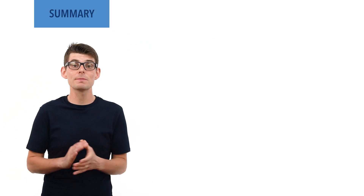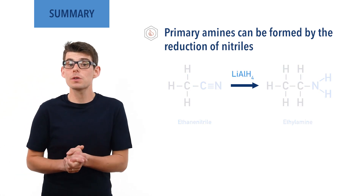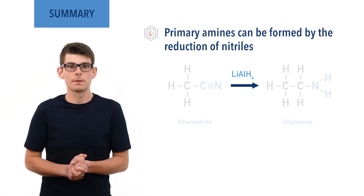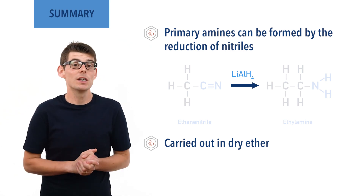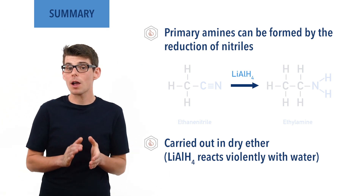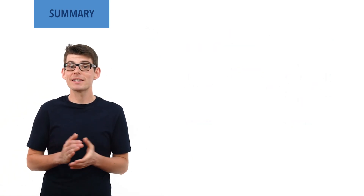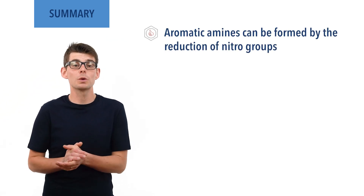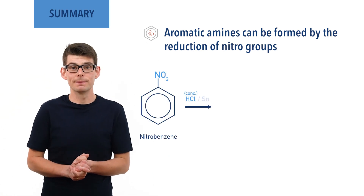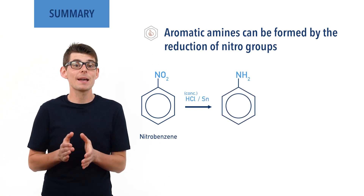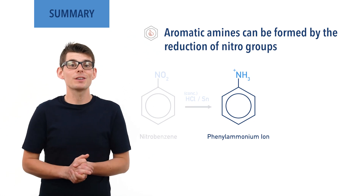Primary amines can also be formed by the reduction of nitriles. LiAlH4 is used as a reducing agent, providing hydride ions H−; the reaction must be carried out in dry ether as LiAlH4 reacts violently with water. Nitriles can also be reduced using hydrogen and a nickel catalyst in catalytic hydrogenation. Aromatic amines can be formed by reduction of a nitro group on an aromatic ring using concentrated hydrochloric acid and tin. The amine formed acts as a base accepting H+ from the acid; sodium hydroxide is then added to liberate the free aromatic amine.